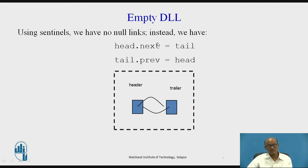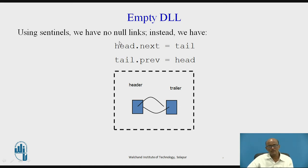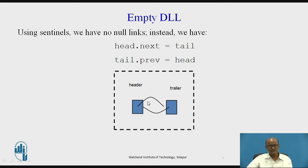Now, the empty doubly linked list. An empty list means there are no nodes and no data part. Using sentinels, we have no null links between nodes. Instead, head.next equals tail and tail.previous equals head. This diagram shows that the links go from header to trailer and trailer to header, with no node in between, meaning this is an empty list.